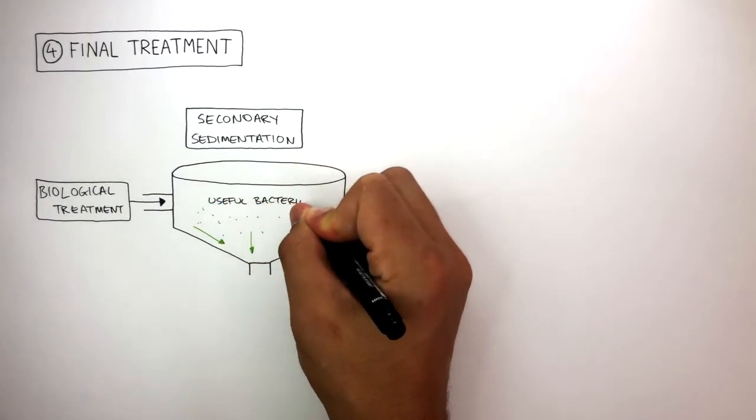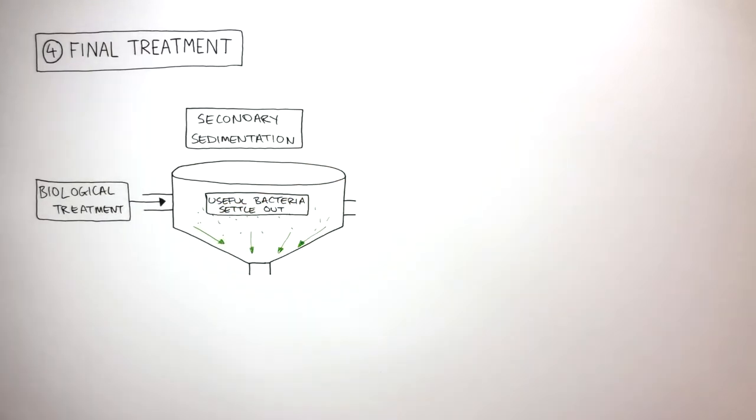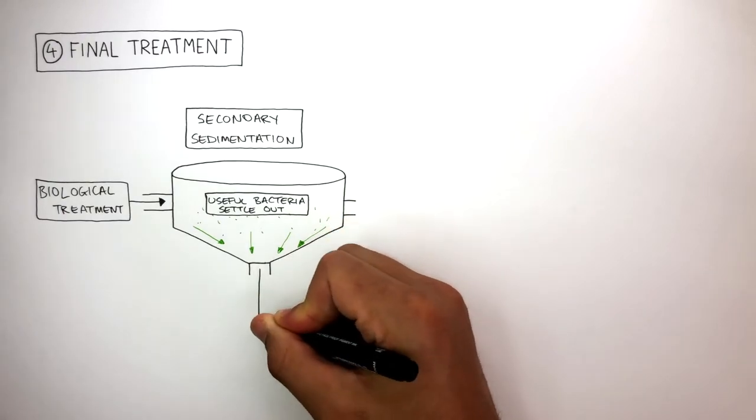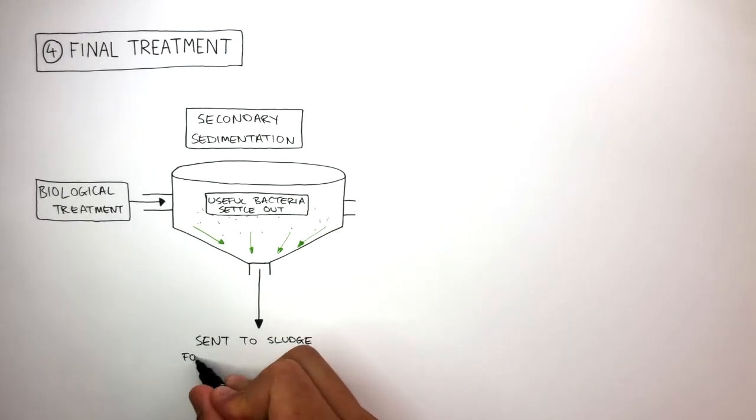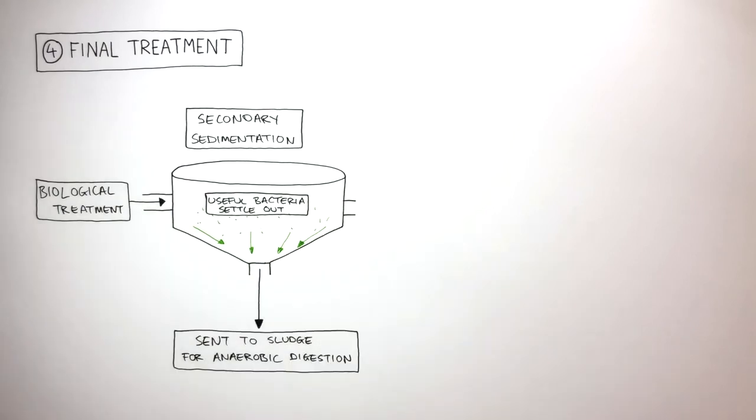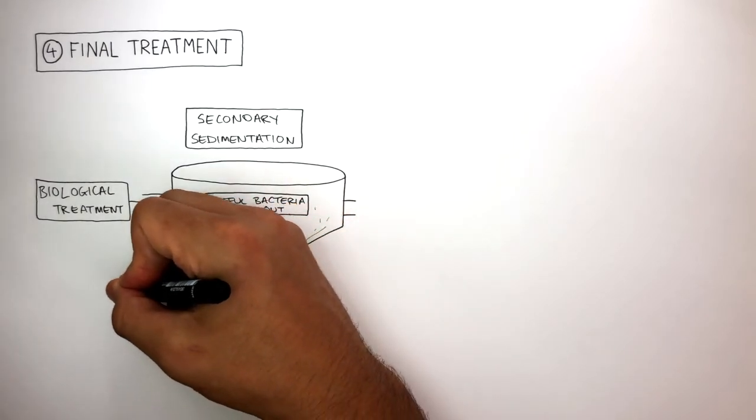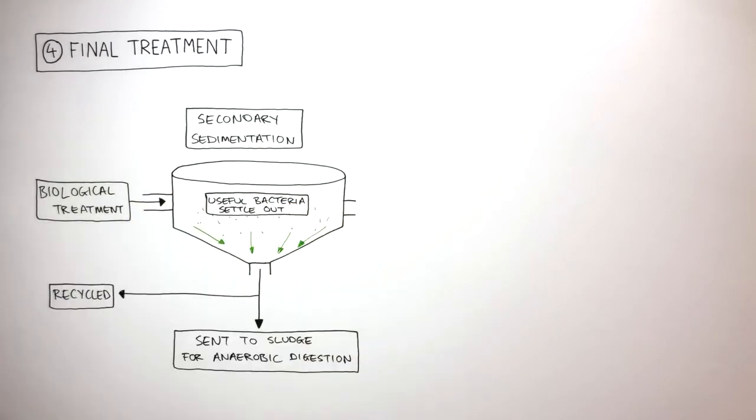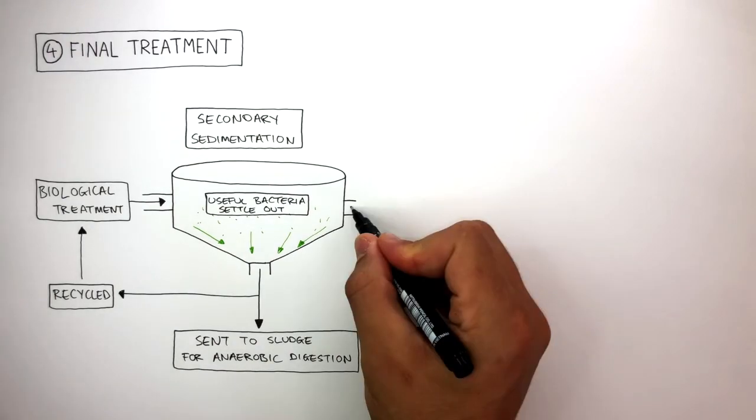This useful bacteria settles to the bottom of the tank where it flows out and is sent to the sludge for anaerobic digestion, or the useful bacteria is recycled back to the biological treatment for the aerobic digestion and breakdown of potentially harmful microorganisms.